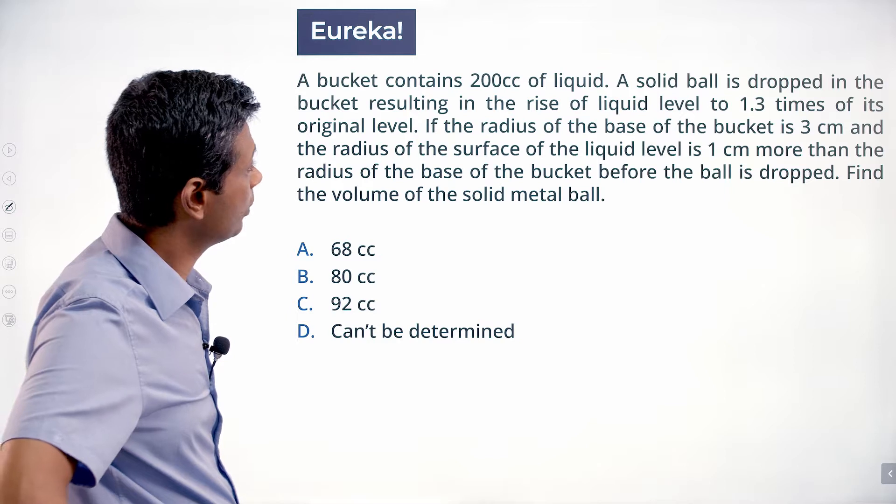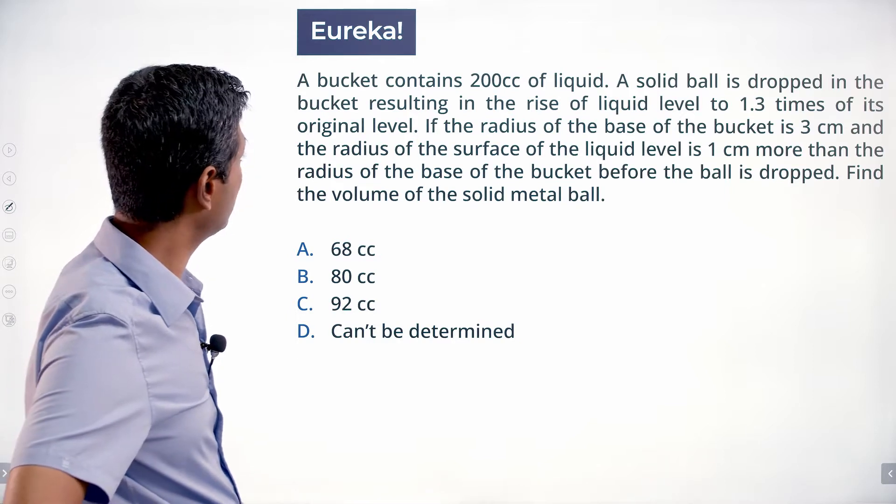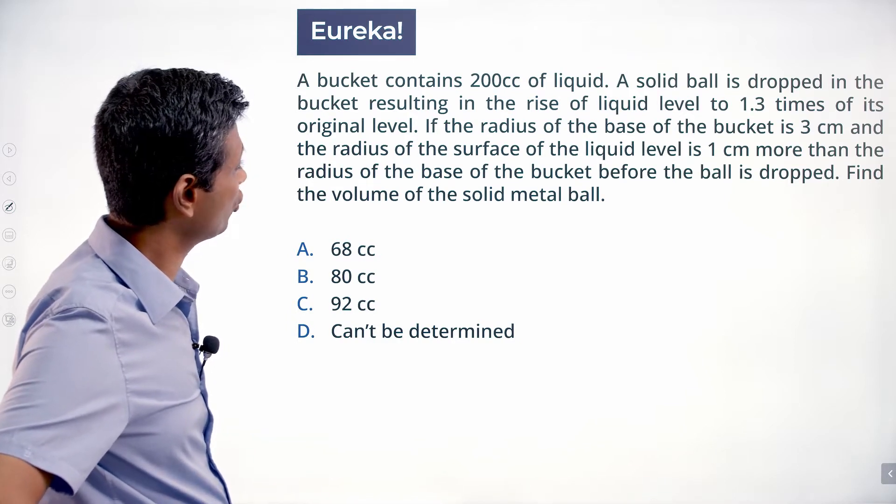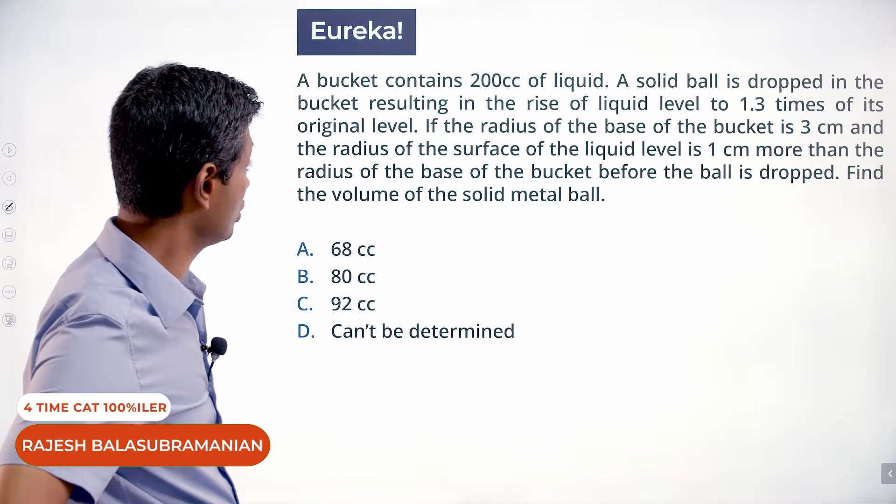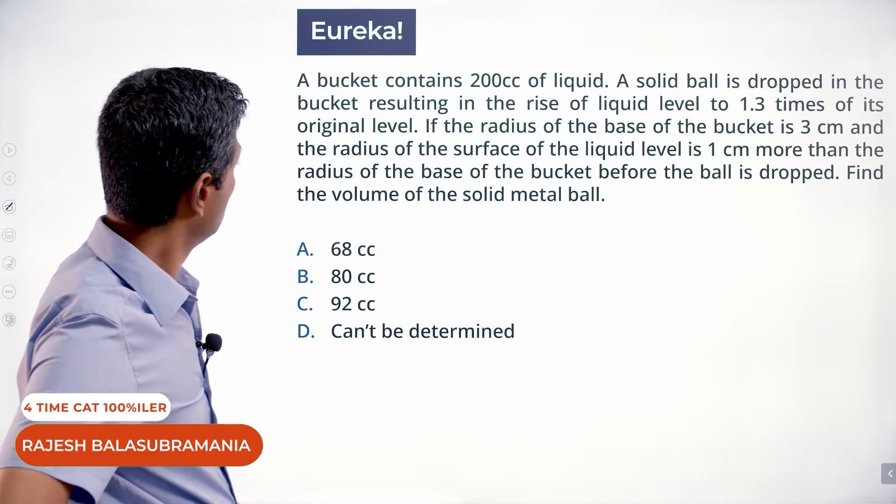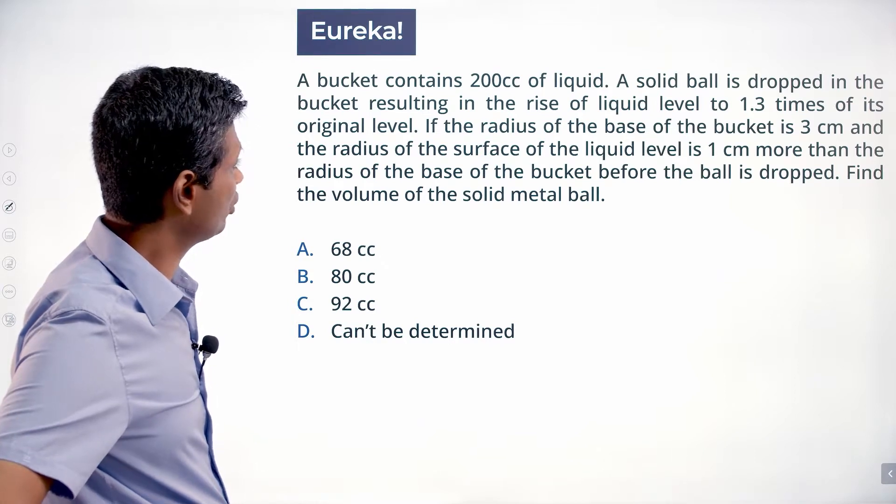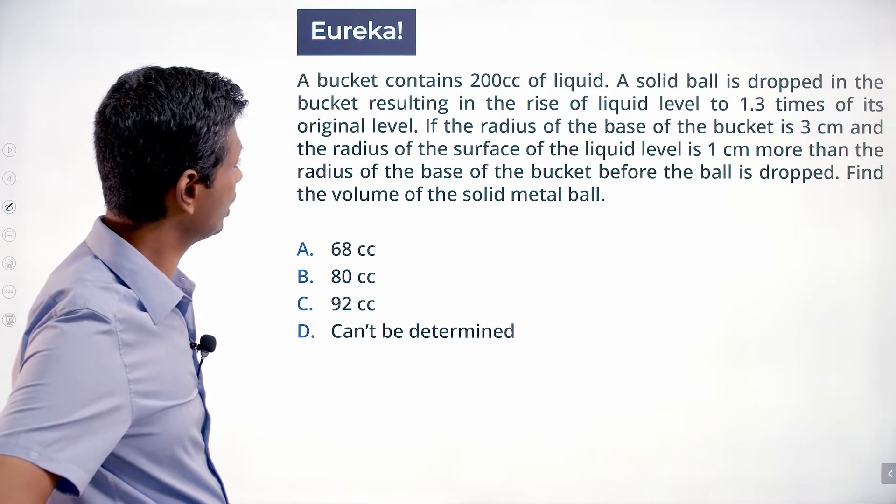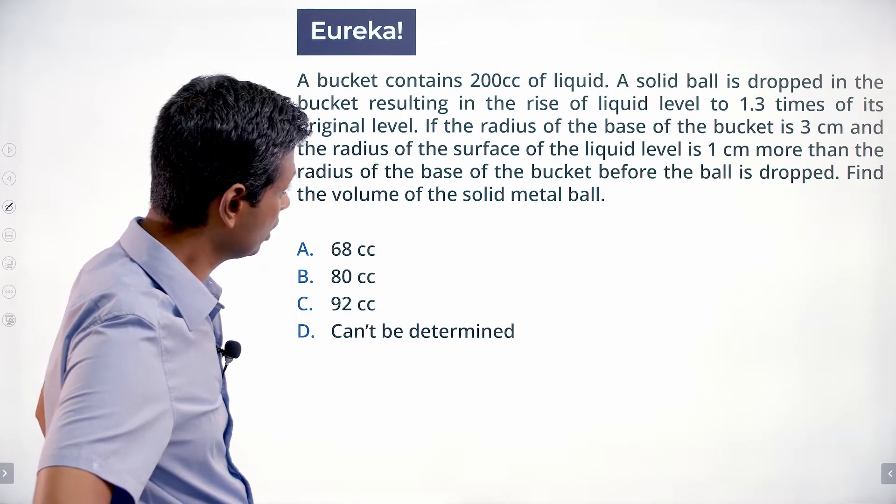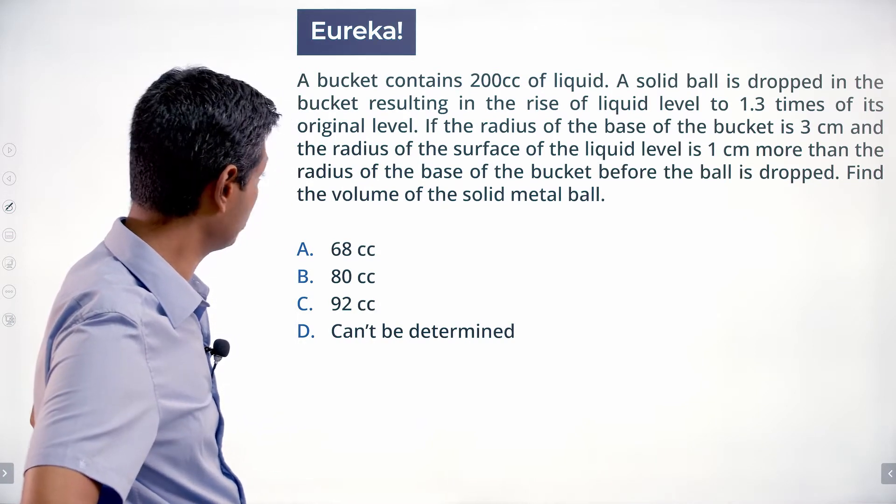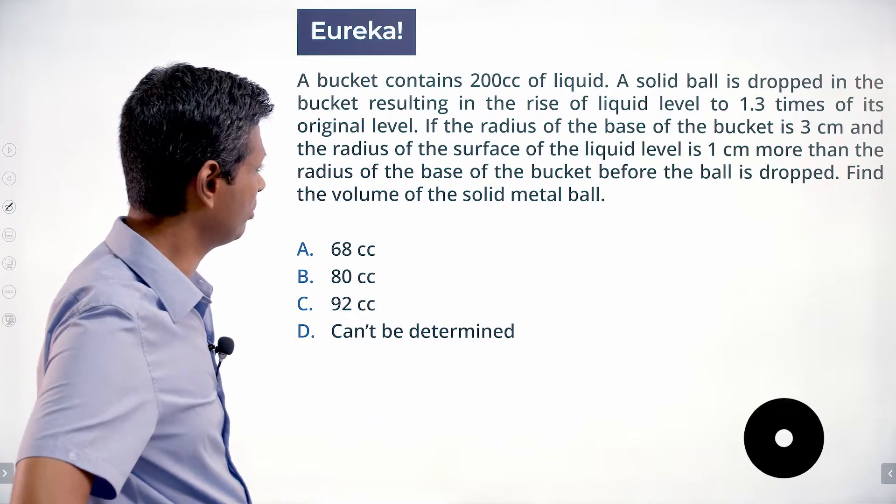A bucket contains 200 cc of liquid. A solid ball is dropped in the bucket resulting in the rise of liquid level to 1.3 times of its original level. If the radius of the base of the bucket is 3 centimeters and the radius of the surface of the liquid level is 1 centimeter more than the radius of the base of the bucket before the ball is dropped, find the volume of the solid metal ball.